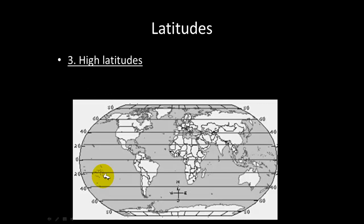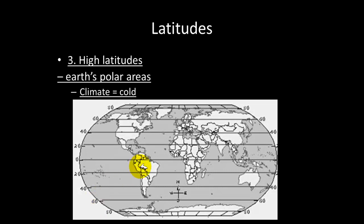The next latitudes are the high latitudes, one step up from the mid latitudes. The high latitudes encompass the earth's polar areas and the climate is extremely cold, because this is the part of the earth farthest away from the sun.